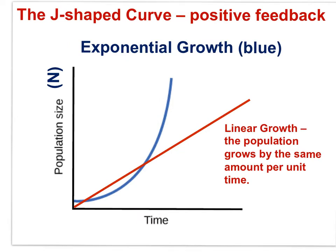Distinguish exponential growth from linear growth. With exponential growth, the number of individuals added to the population increases with each unit of time, while with linear growth, the number of individuals added is the same per unit time. Exponential growth results from multiplying the size of the population by a factor — a multiplier. Exponential growth always involves a multiplier, which we will name later in the movie.